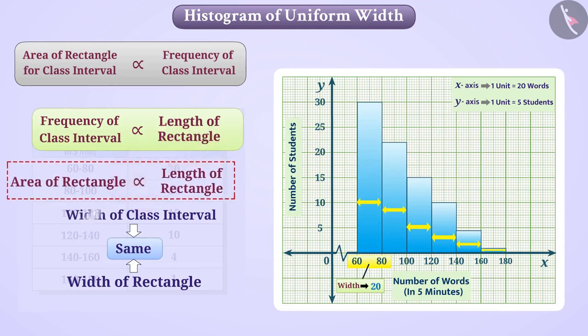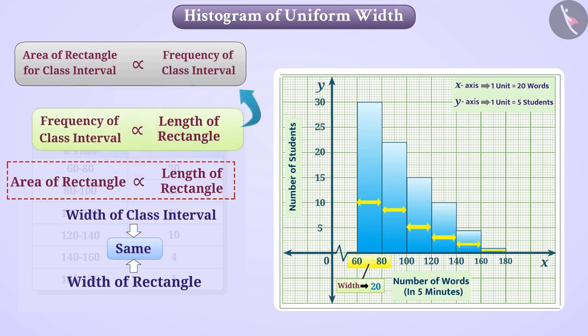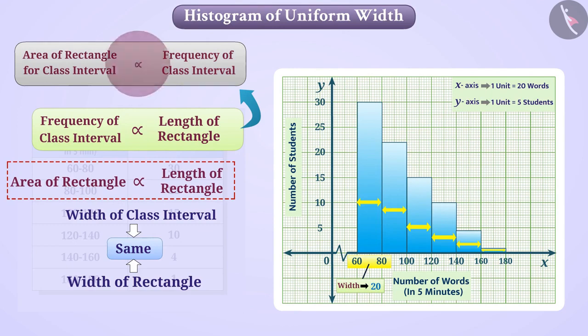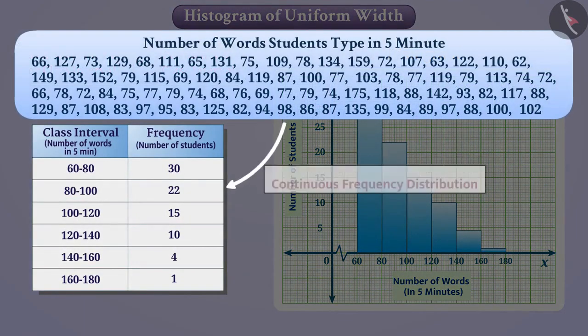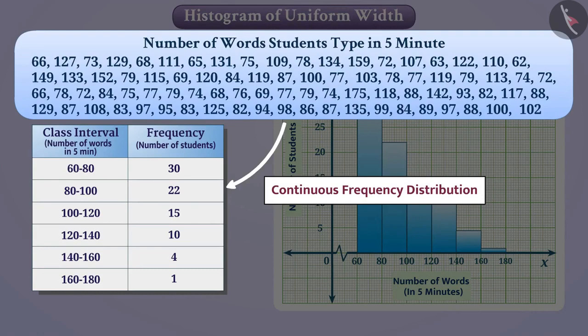In this way, when the width of each class interval is the same, then the length of the rectangle can be taken in proportion to the frequency of the class intervals. This will also make the area of the rectangle proportional to the frequency of that class interval. In this way we will get a histogram. Here the data is classified as continuous frequency distribution.